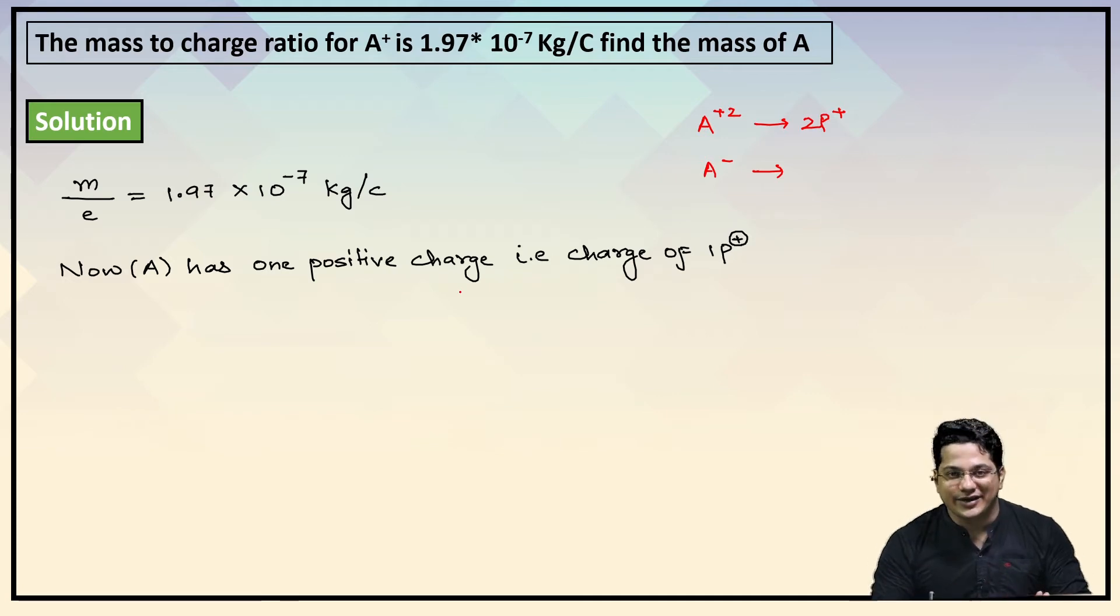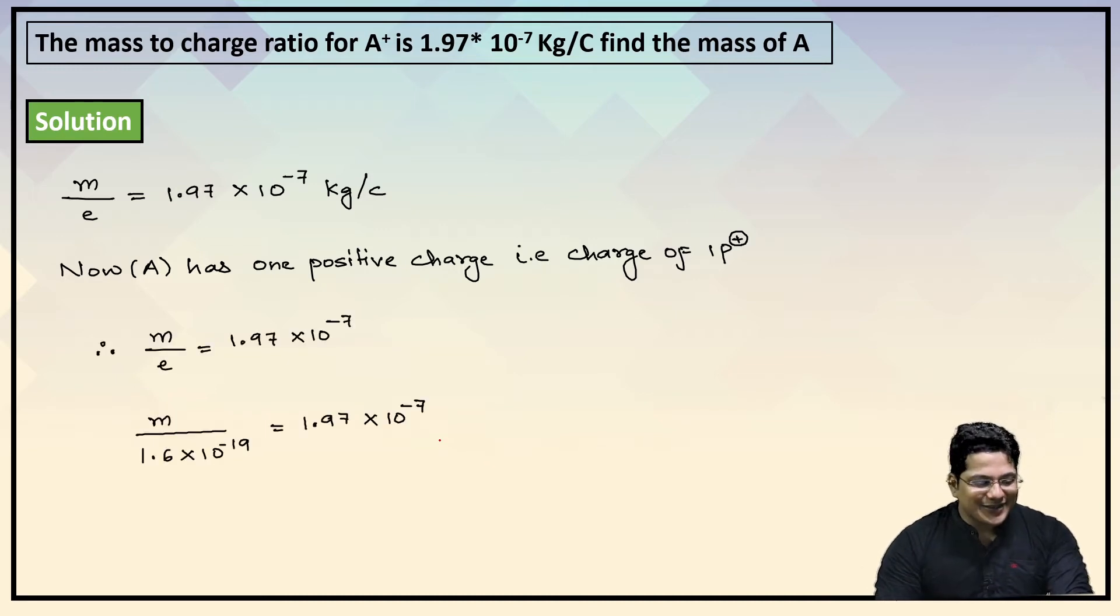Right now in our problem, we are talking about A with one positive charge, that means one proton. So what is the charge of one proton? We know it is 1.6 × 10⁻¹⁹. We have just plugged in the values.